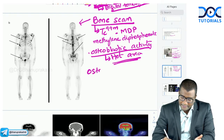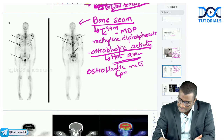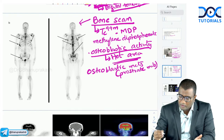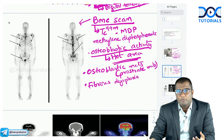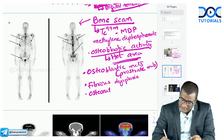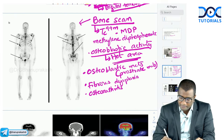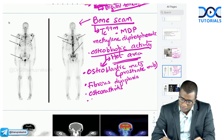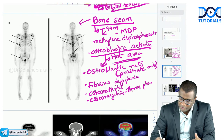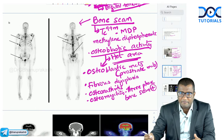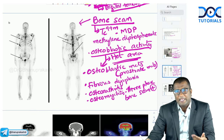Hot uptake on bone scan is seen in: osteoblastic metastases such as prostate metastasis; fibrous dysplasia, which involves proliferation of woven bone with osteoblastic activity; osteoarthritis, due to subchondral sclerosis; and osteomyelitis, because of involucrum or new bone formation. In osteomyelitis, the three-phase bone scan is positive in all three phases — blood flow phase, blood pool phase, and delayed phase.